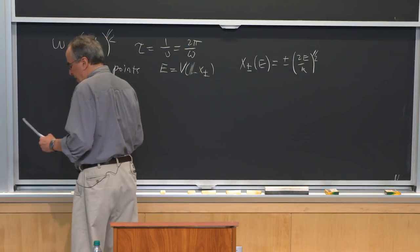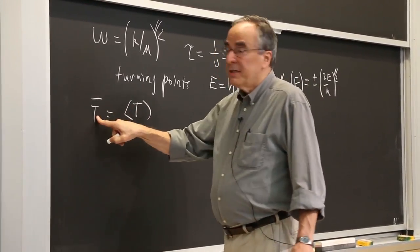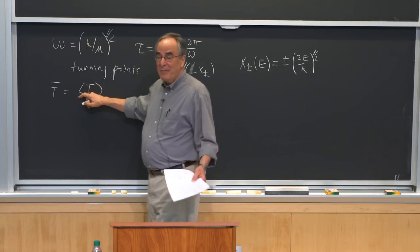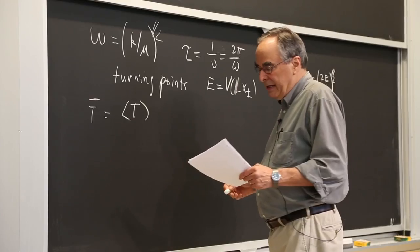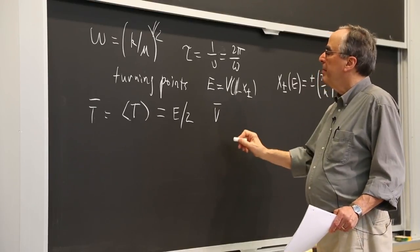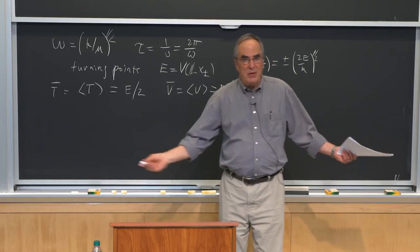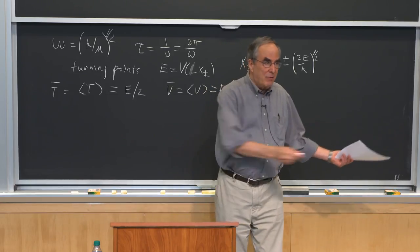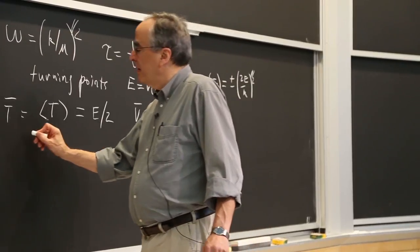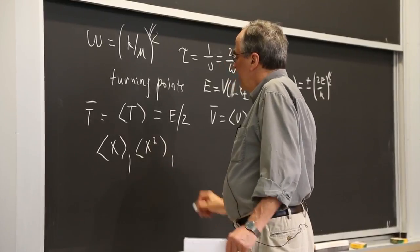At the end of the previous lecture, I calculated the classical mechanical average. We found that the average kinetic energy was the total energy divided by 2, and the average momentum squared is the energy divided by 2. That's the basis for some insight, because as a harmonic oscillator moves, it throws energy back and forth between kinetic energy and potential energy.